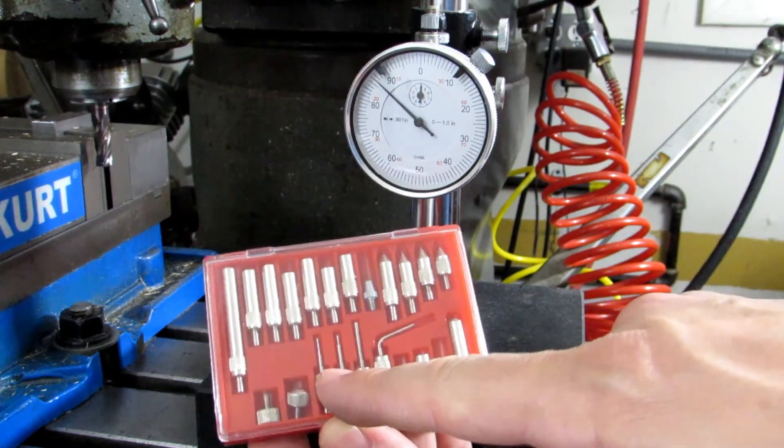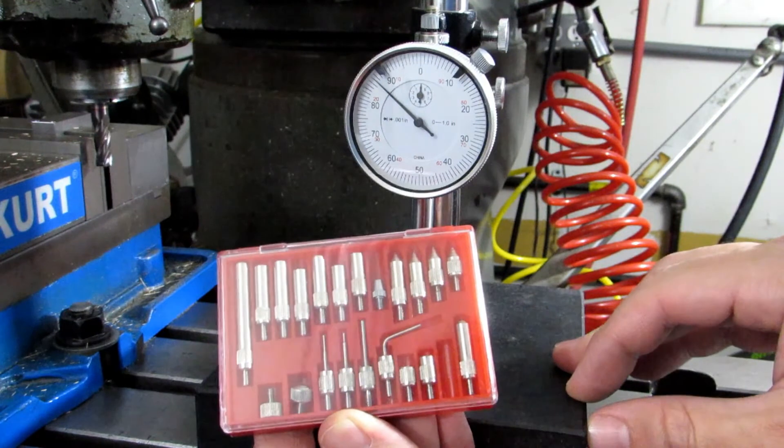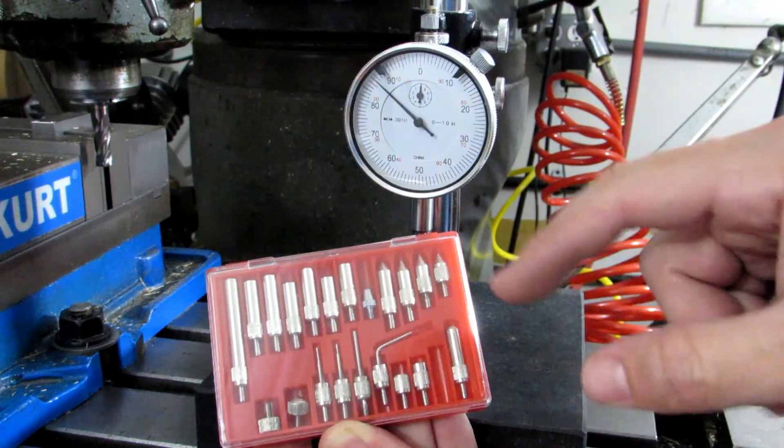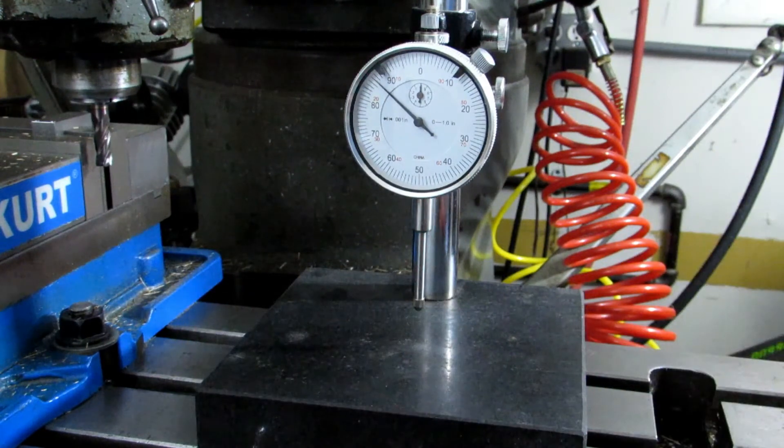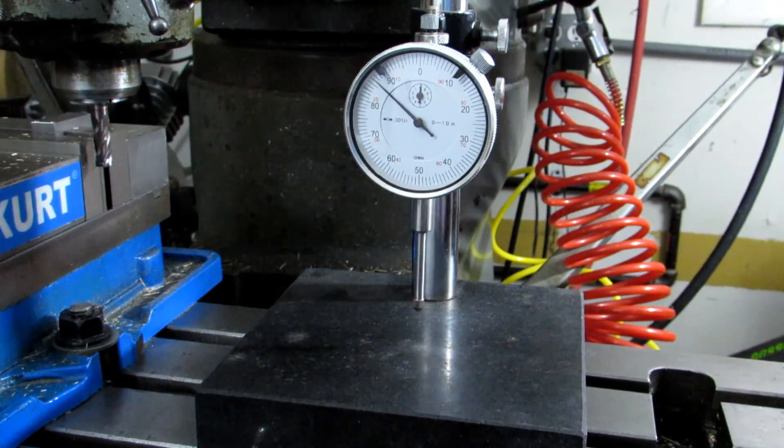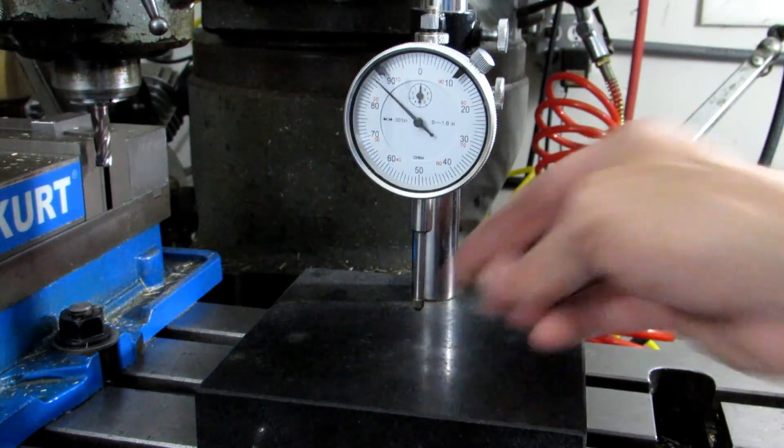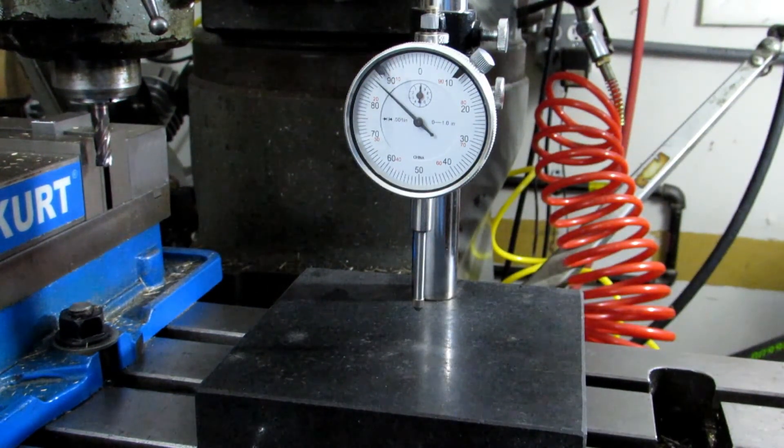They have these long slender tips that you can also use for slots and grooves and things like that. Then you've got this bent tip that you can use for measuring undercuts on your pieces. They're all very handy to use with the comparator stand. I hope this helps. I'll see you next time.